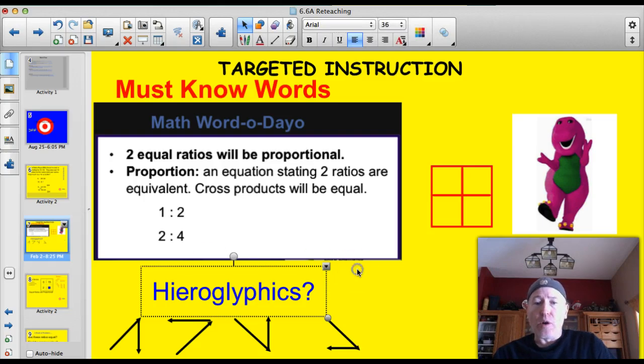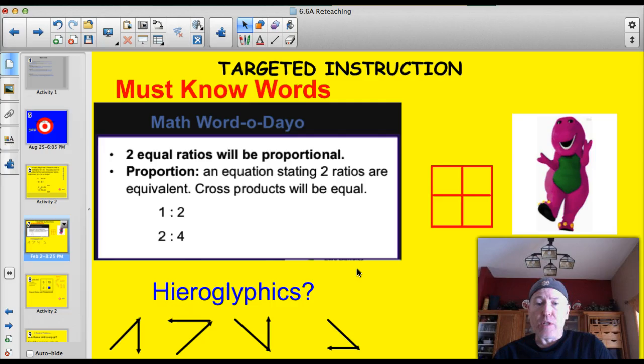Tonight, our words of the day. First of all, two equal ratios will be proportional. And a proportion is an equation stating that two ratios are equivalent. So the cross-products will be equal, like 1 to 2 and 2 to 4. I have one glass of milk for every two cookies, or two glasses of milk for every four cookies. These are proportional, and if I multiply the cross-products, 1 times 4, I've got 4, 2 times 2, I've got 4. And that's the quick way that I can check that.